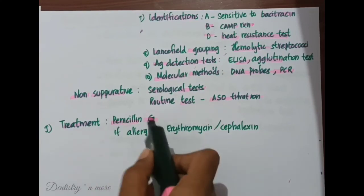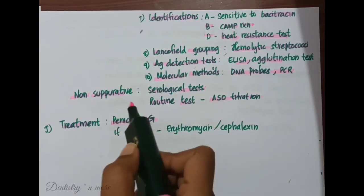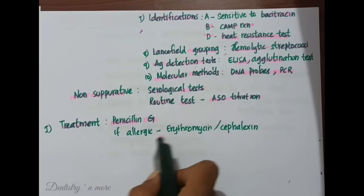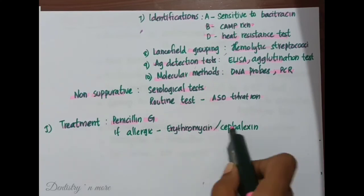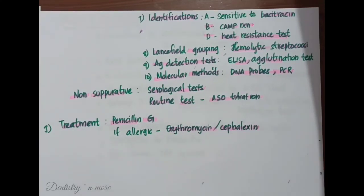Treatment for Streptococcus pyogenes includes penicillin G, which is the drug of choice. In patients allergic to penicillin, erythromycin or cephalexin can be used.